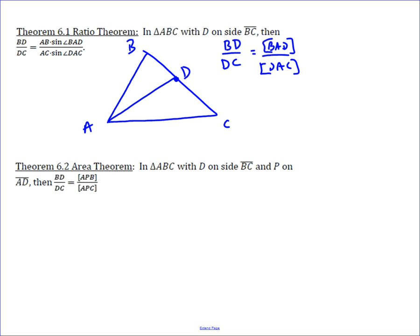That means the altitude from A to that line is the same for both triangles. So when you calculate area, the only difference is the ratio of those two baselines.